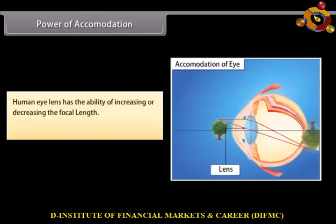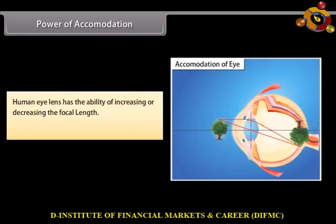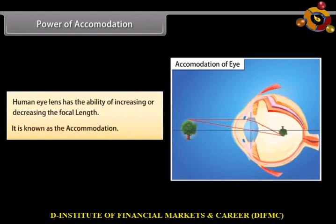Power of Accommodation. The human eye lens has the ability of increasing or decreasing its focal length. This is known as accommodation. Accommodation is achieved with the help of ciliary muscles.